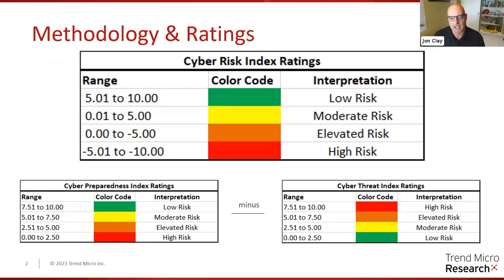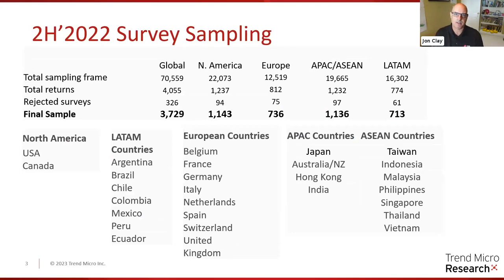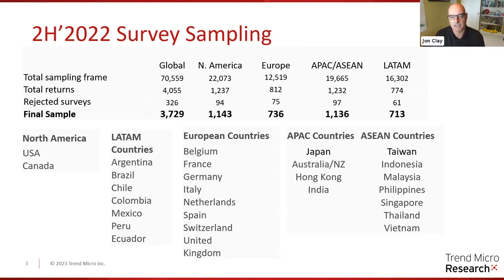This is a global survey. I started out doing North America only for the first couple of years, but then we added global countries to get a better view of what cyber risk looks like. Our final sampling had over 3,729 surveys out of 4,000 returned — we rejected 326. You can see the breakdown: North America, Europe, APAC, and Latin America and South America countries. We have 29 countries represented in the index, giving us a very good sampling of what's happening around the world.